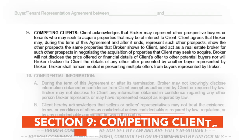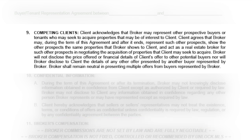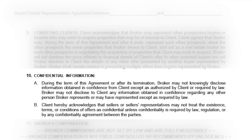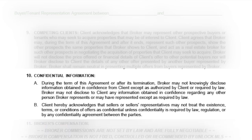The ninth section is Competing Clients. The broker can represent other clients who might be interested in properties that are also of interest to the client signing this agreement. Without this clause, a broker or agent would not be able to perform their fiduciary duties to all of their clients. The tenth section is Confidential Information. It details how confidential information will be protected and will not be disclosed without the client's authorization or unless required by law. It also details the limits on what the broker will share with the client as related to other agreements and plans.